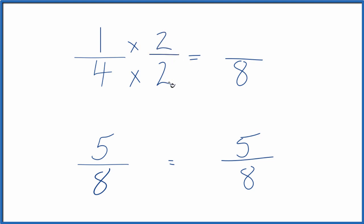That's because two divided by two is just one, so we're multiplying one-fourth times one. We'll have the same value, just represented differently. One times two is two, and we have two-eighths.